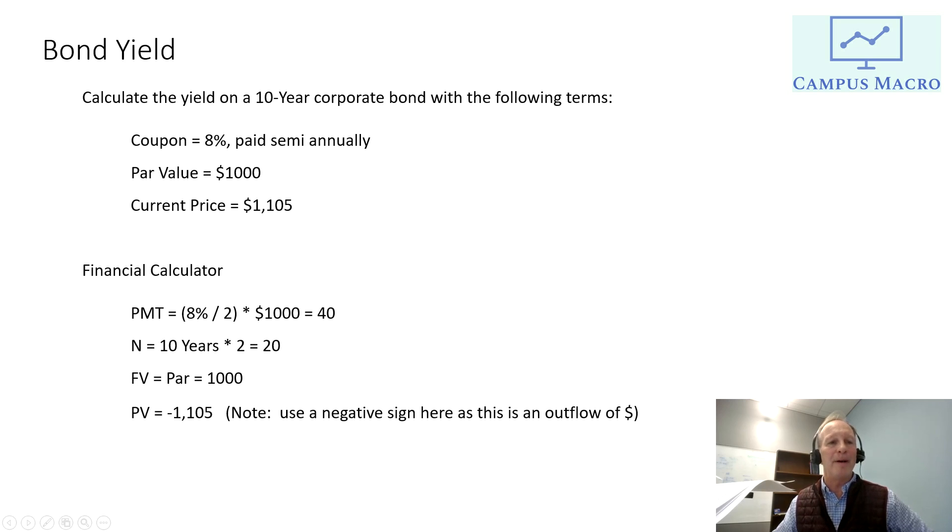Now, notice that I'm going to punch in a negative number, negative $1,105. Why am I going to do that? Because that's $1,105 out the door, and it's $1,000 in, and it's $40 in. So I have to use a negative sign. If I don't use a negative sign, I'll actually get an error on this problem. So you don't want to do that.